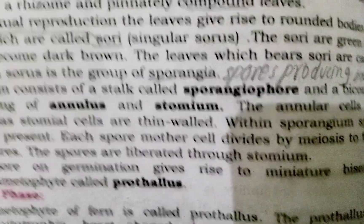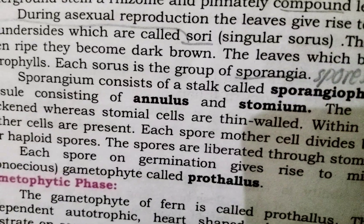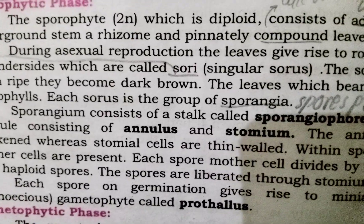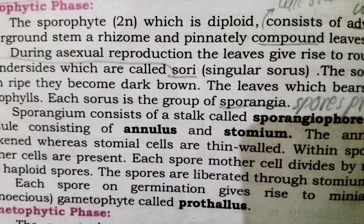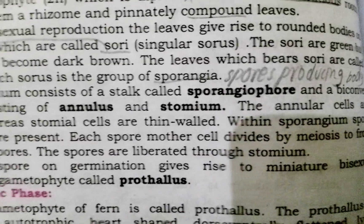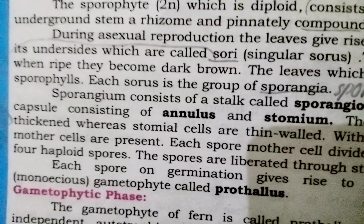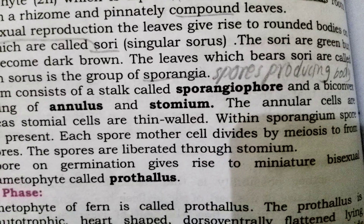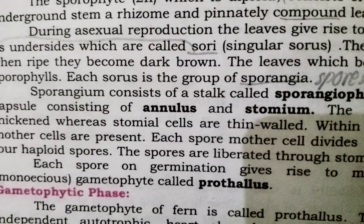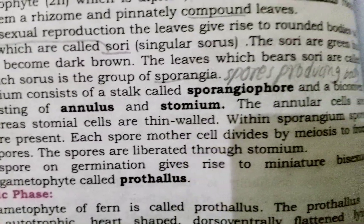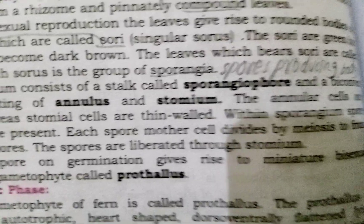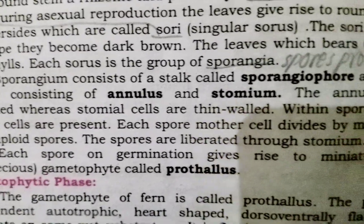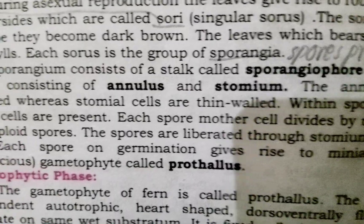The annular cells are thickened whereas stomium cells are thin. Within the sporangium, spore mother cells are present. Each spore mother cell is divided by meiosis to form four haploid spores. These spores are liberated through the stomium.